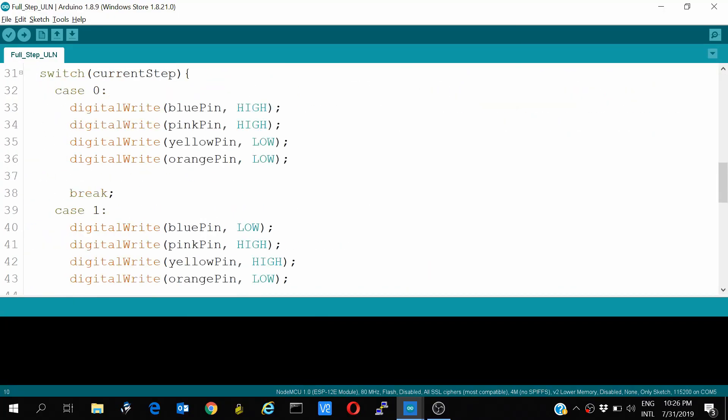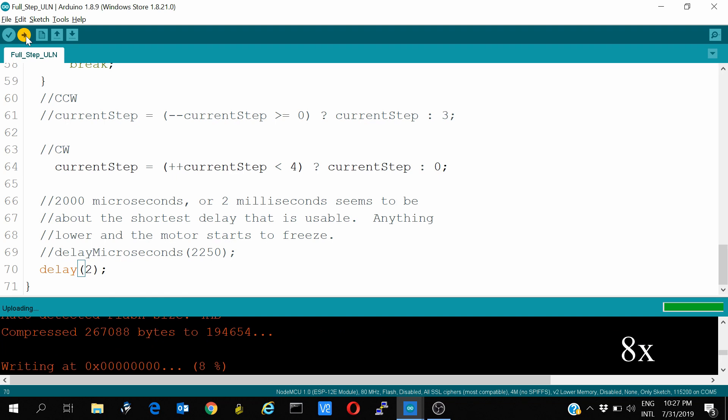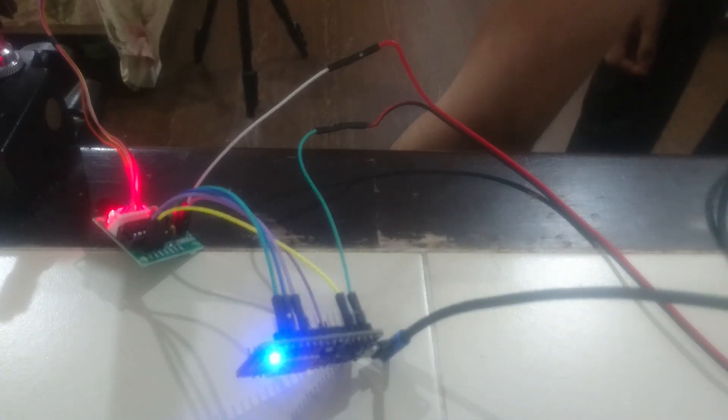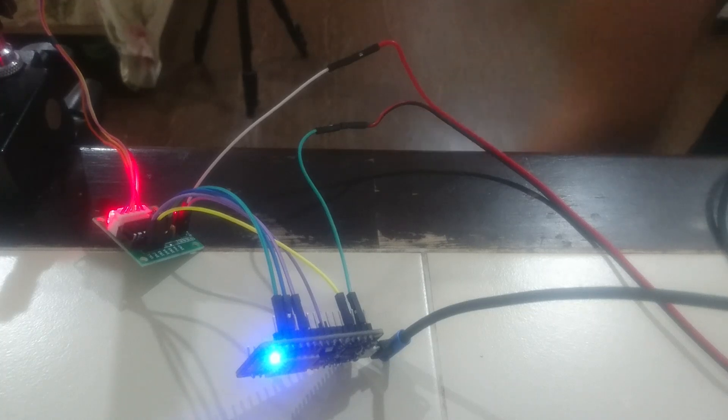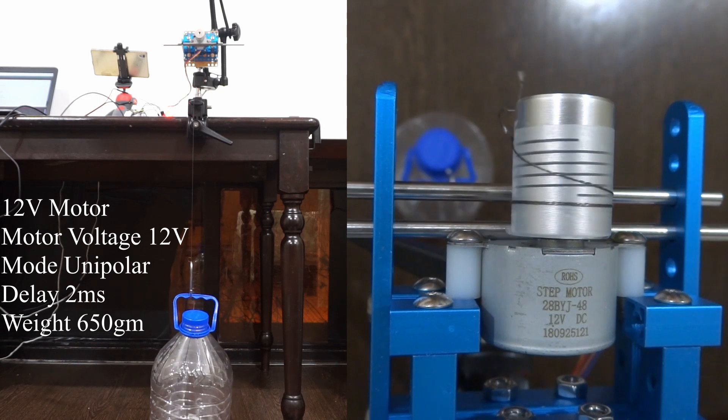So let's set the code with 2ms step delay and see the torque. This is the same code which we used for 5V motor and this is the unipolar code. This setup is using the same unipolar stepper driver with a 12V motor and a 12V DC power supply. The weight of the bottle is 650 grams.